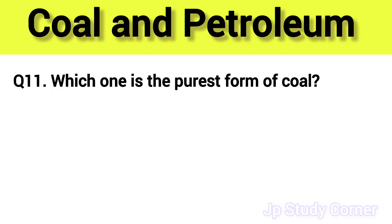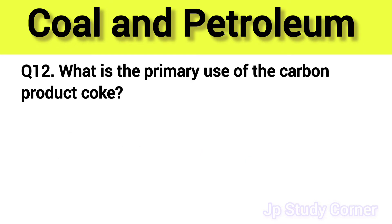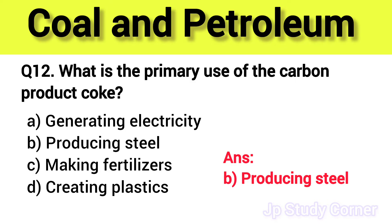Question number eleven: which one is the purest form of coal? The right answer is option D — anthracite. Question number twelve: what is the primary use of the carbon product coke? The right answer is option B — producing steel.